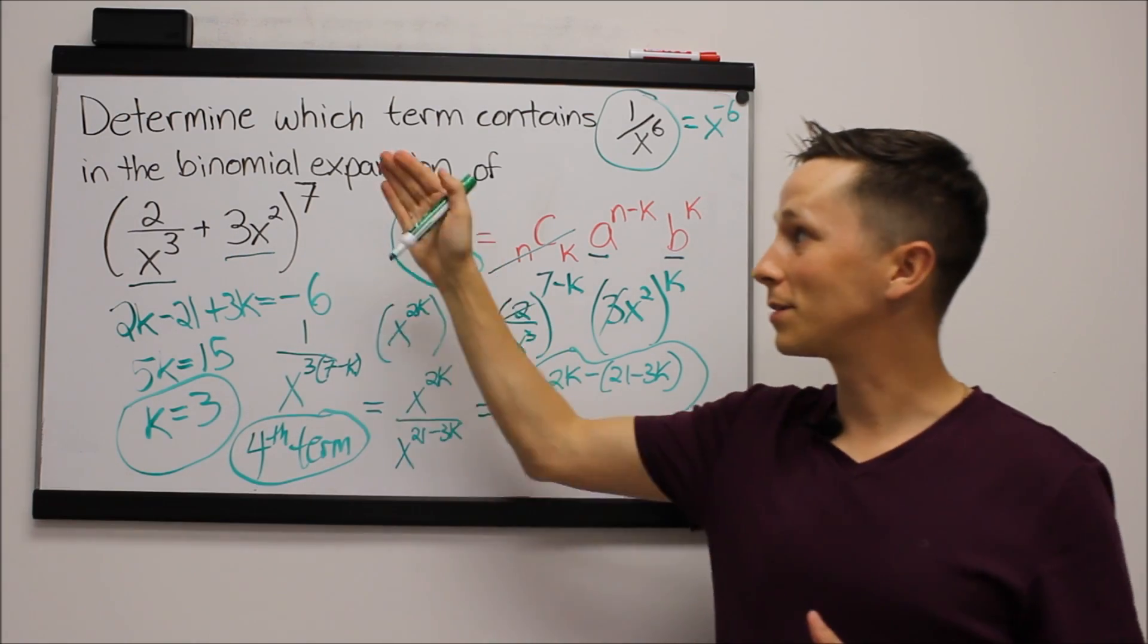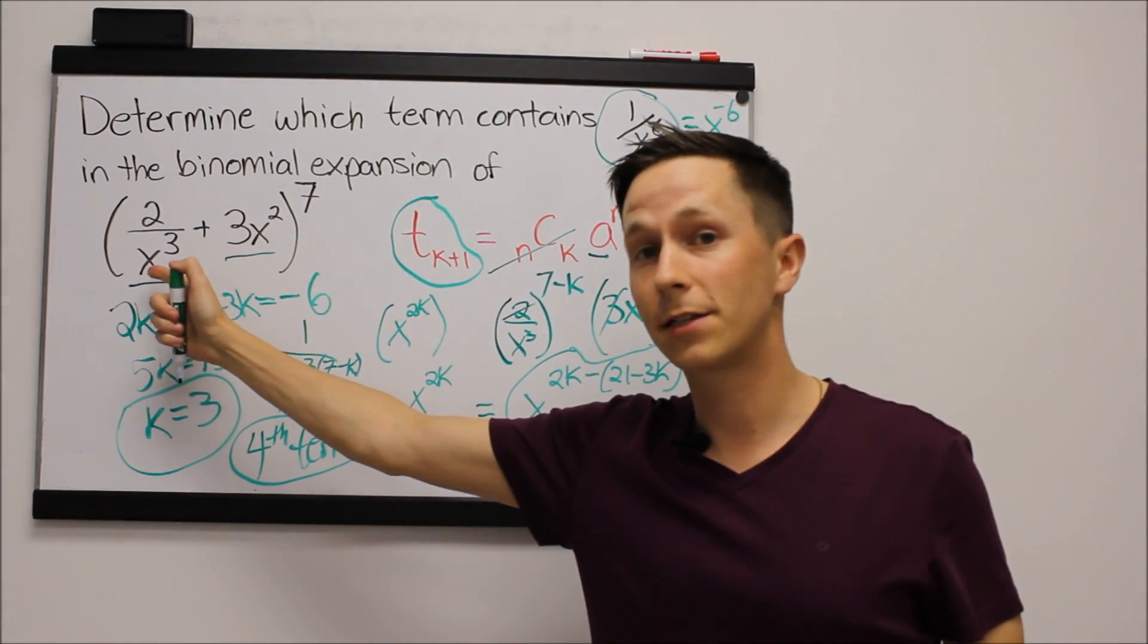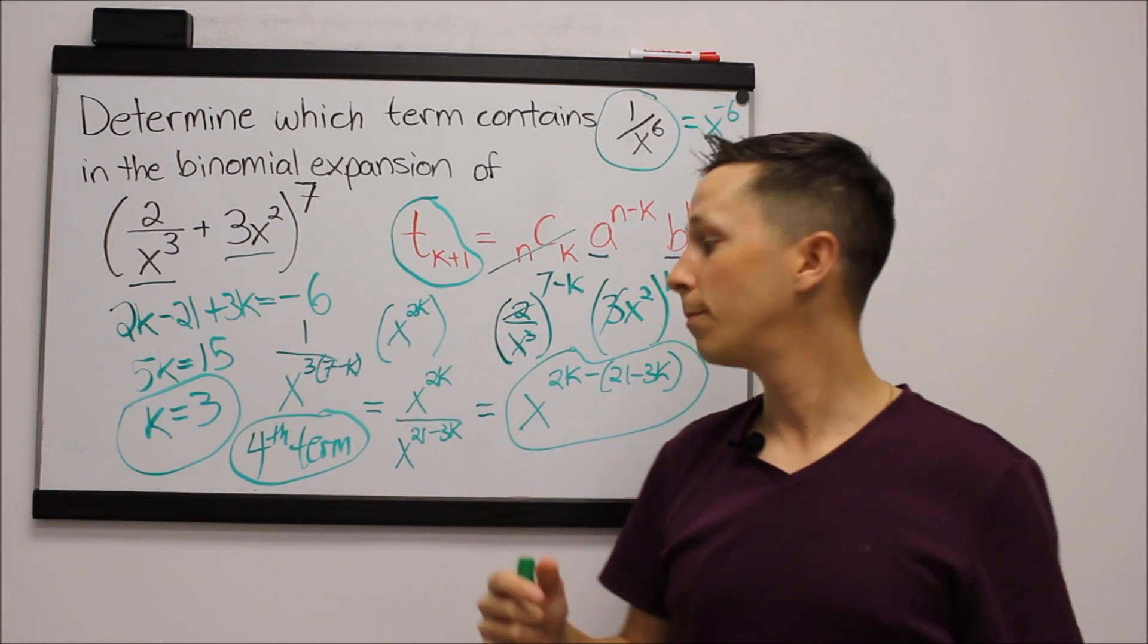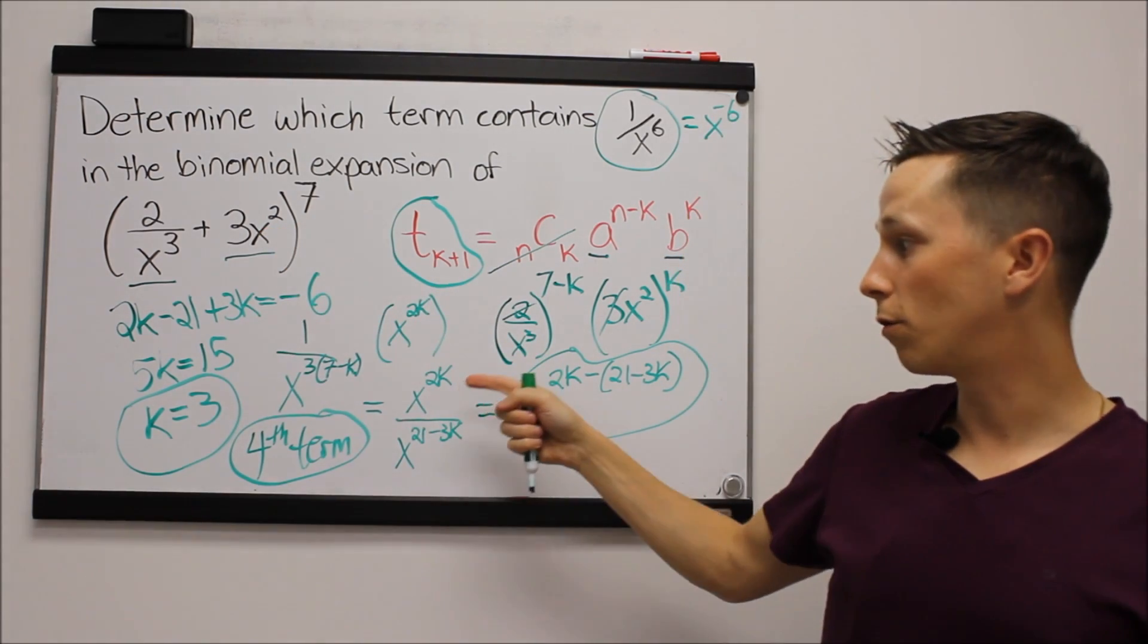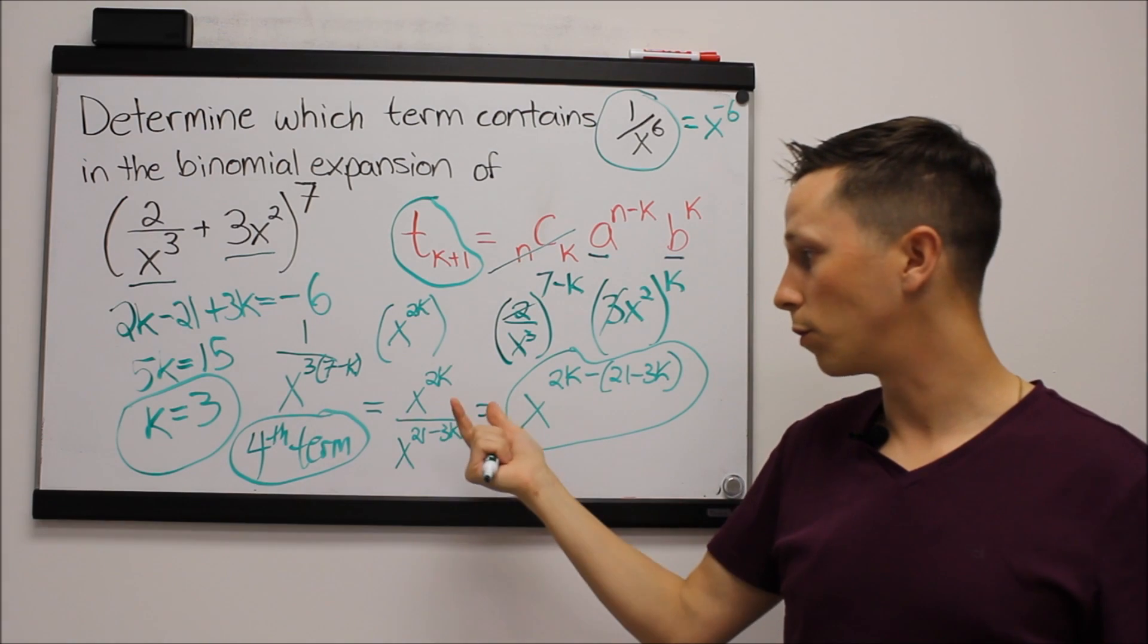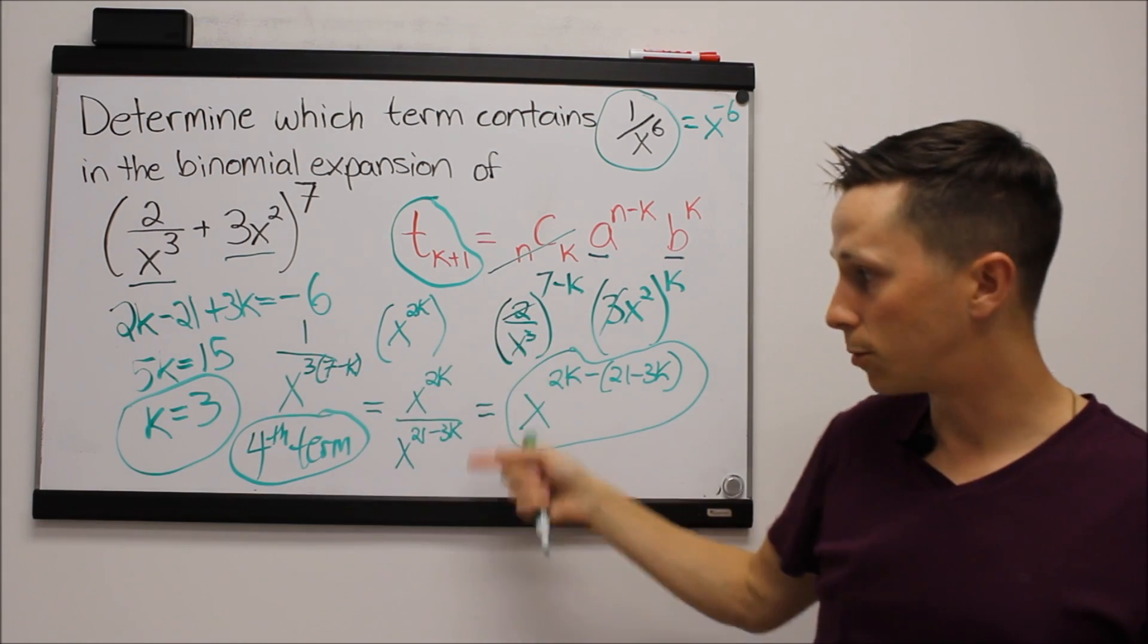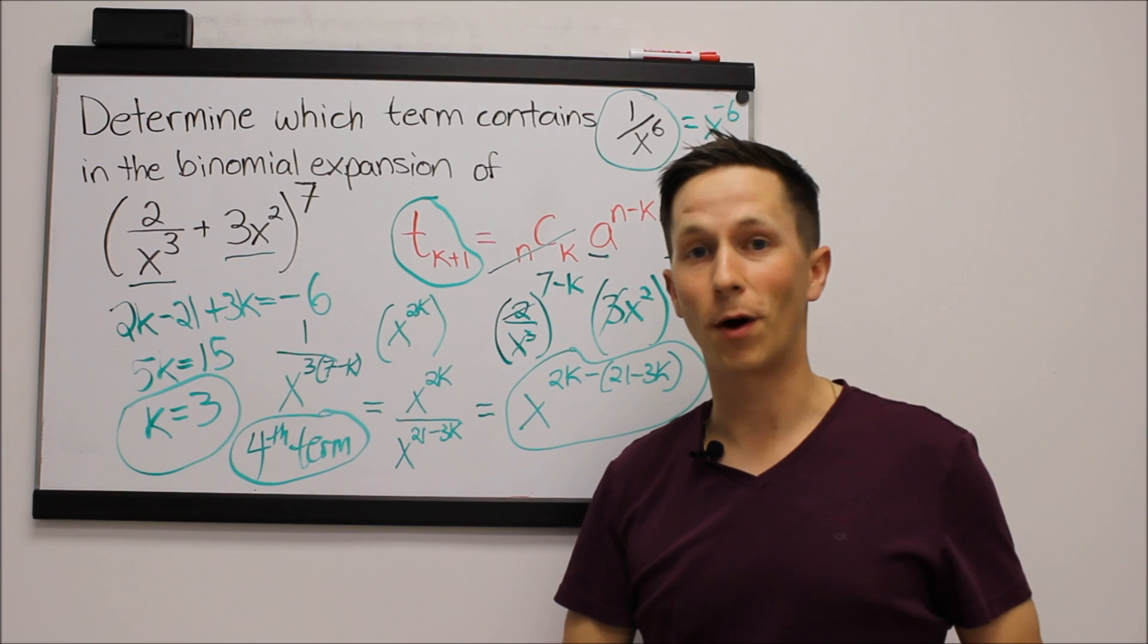The problem is this one's a little bit more difficult because we've got x's on the bottom and x's on the top in each term. So you have to make sure that you apply all of our exponent rules—multiplying it through, subtracting—and then setting that equal to the exponent we want.